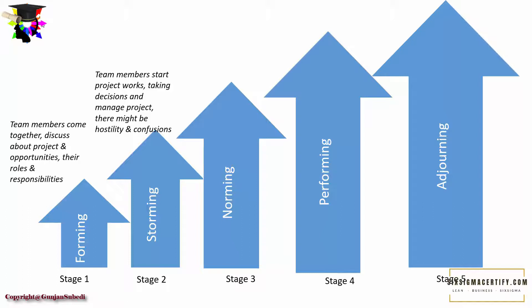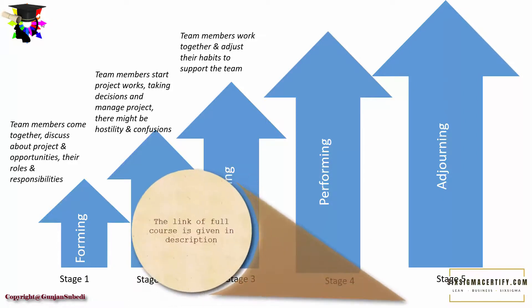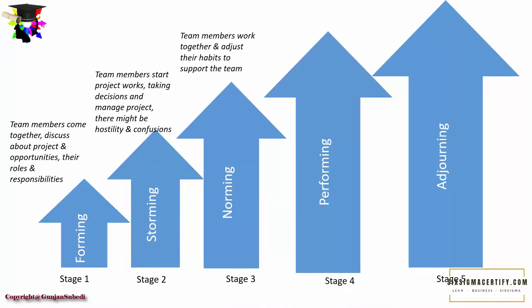Then there is the third stage, which we call the norming stage. Here the team members work together and adjust their habits to support the team. In stage two, people are just headed towards doing the project and do not know each other well. So they are not used to the habits of their team members, and it takes time to adjust to each other's thinking and working patterns. In the norming stage, they start to walk together and adjust to each other's habits.